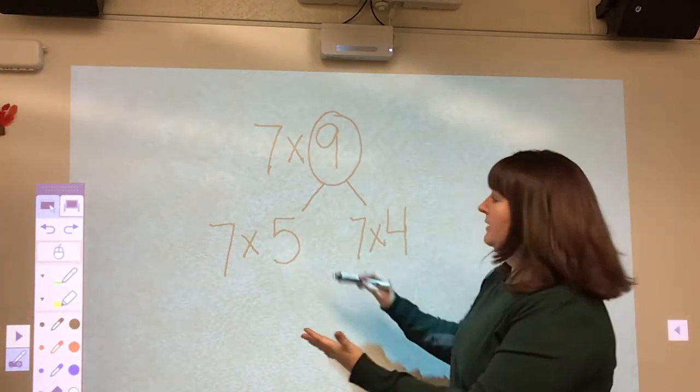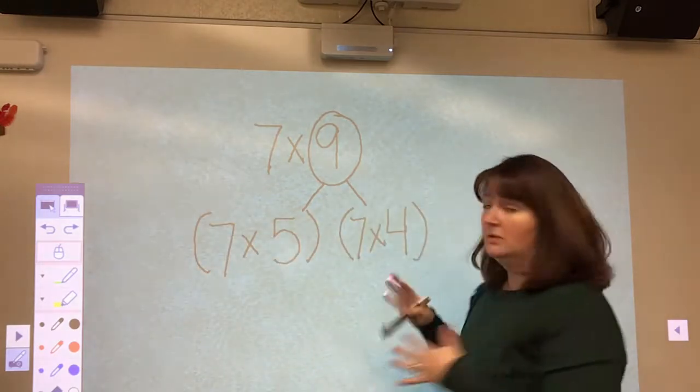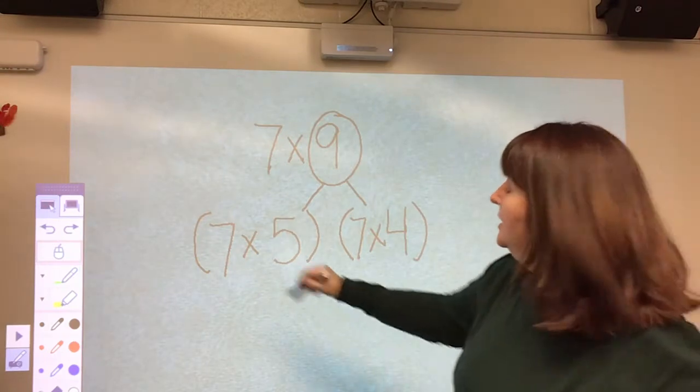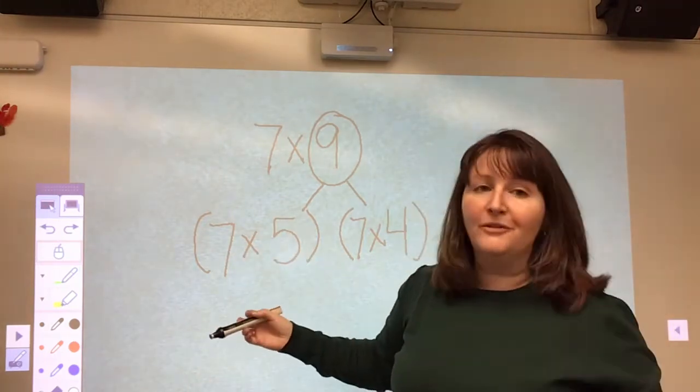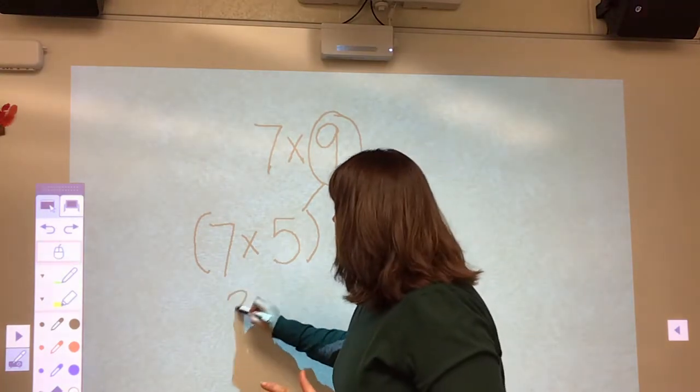So now I'm going to solve each one of these problems. I'm going to put parentheses around them. Parentheses mean do this first. So 7 times 5. You know your 5's facts. Skip count by 5's. That equals 35.